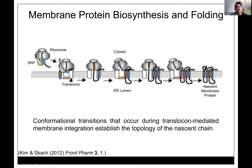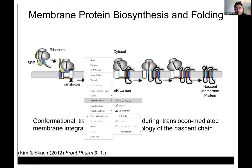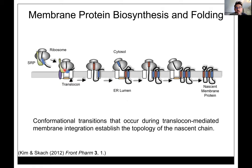Here's the classic textbook cartoon: during translation of a membrane protein, as the first hydrophobic bits emerge, the ribosome is stalled by the signal recognition particle (SRP), which delivers the ribosome to the SRP receptor and into a machinery called the translocon — basically a pore in the endoplasmic reticulum membrane. GTP hydrolysis then releases SRP.